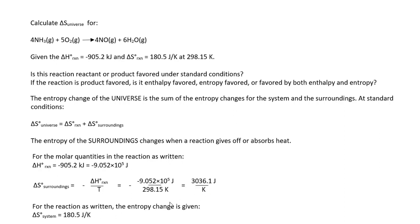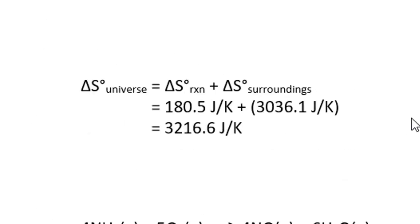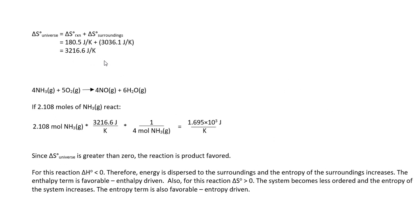Next, we're going to use these two values, 3036.1 and the ΔS_system that's given to us of 180.5 in this equation. And we determine that the ΔS_universe is a positive 3216.6 joules per kelvin. Therefore, the reaction is spontaneous and is product favored under these conditions since ΔS_universe is greater than zero.